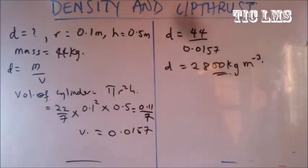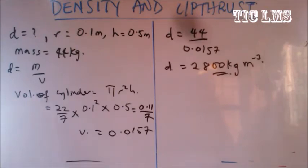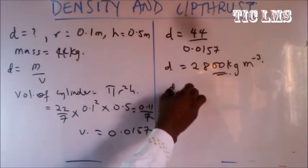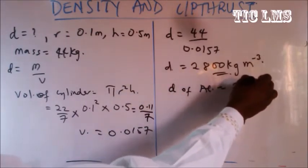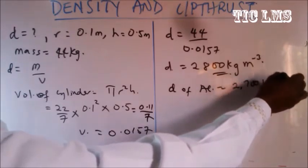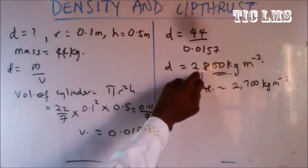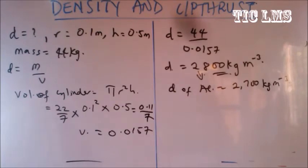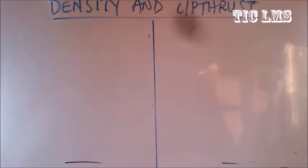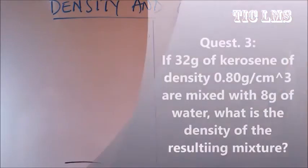We need to identify what kind of material the cylinder is made of by comparing our result of 2800 kg/m³ with standard densities. We note that the density of aluminium is 2700 kilogram per meter cubed, so we conclude the cylinder is made of a material similar to aluminium.